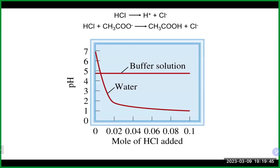This is a graphical representation of what we've been talking about. The buffer is able to maintain pretty much its pH, while in a non-buffer like water, because of the increase in H⁺ concentration, we see a fairly big drop in pH as we add more acid to it — because of that buildup of H⁺ freely floating in solution.